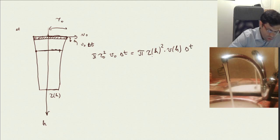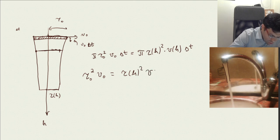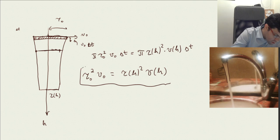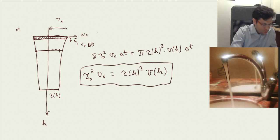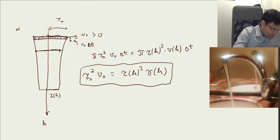This thin chunk is going to be in the next level. We have this conservation that it has to be equal to pi r of h squared times v of h, because v of h is growing - it's accelerating. The fluid is being accelerated, v of h delta t. Basically we can now reduce delta t from the equation, and we get r0 squared v0 equals r of h squared v of h. This is our invariant.